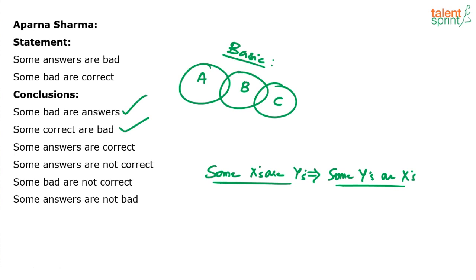Some answers are correct? In the basic diagram itself, it feels like some answers are correct is possible, but actually some answers are correct is wrong. Some answers are not correct? Well, it satisfies the basic diagram — some answers are not correct.